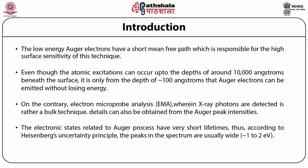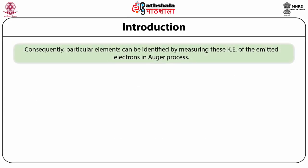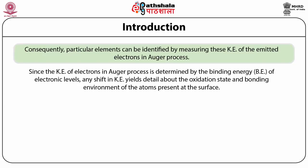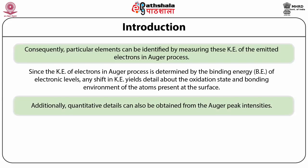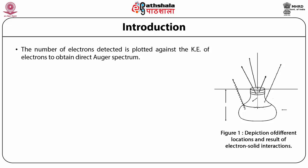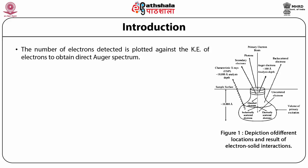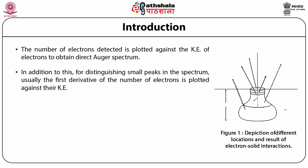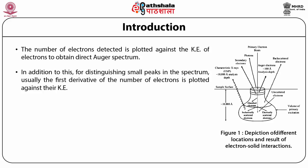Auger electron kinetic energy is specific to the emitting atom. Consequently, particular elements can be identified by measuring the kinetic energies of the emitted electrons in the Auger process. Since the kinetic energy in the Auger process is determined by the binding energy of the electronic levels, any shift in the kinetic energy yields detail about the oxidation state and bonding environment of atoms at the surface. Additionally, quantitative details can be obtained from Auger peak intensities. The number of electrons detected is plotted against kinetic energy to obtain the direct Auger spectrum. For distinguishing small peaks, the first derivative of the number of electrons is plotted against kinetic energy.